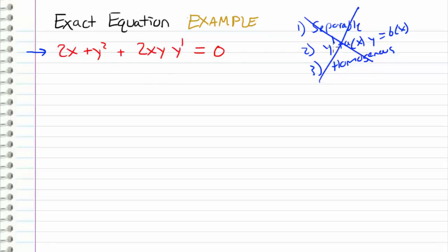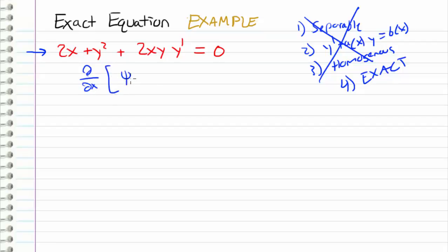Since all three of these options are not available, what we do now is check to see if it is an exact equation. Recall that an exact equation refers to a differential equation of this form: the partial derivative with respect to x of a function psi, which is a function of x and y, equals zero. We can write this expression out explicitly by applying this differentiation operator.